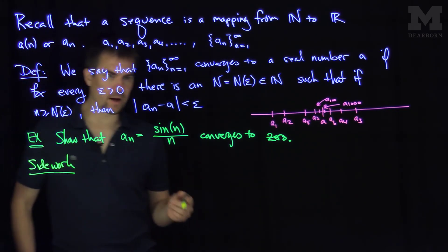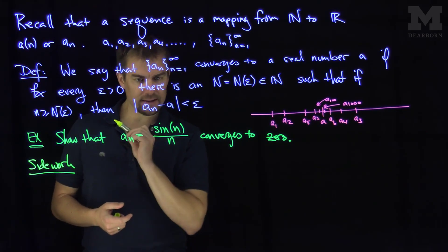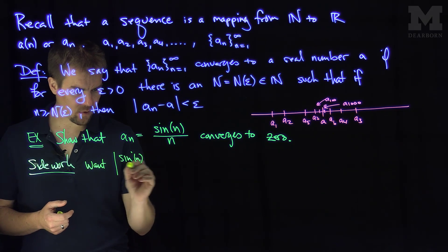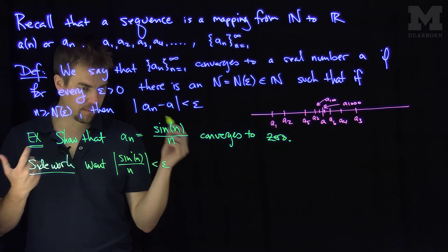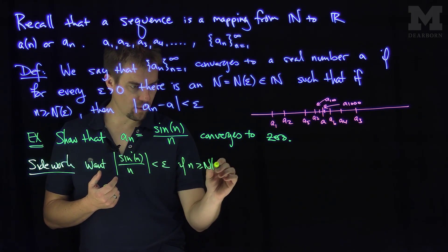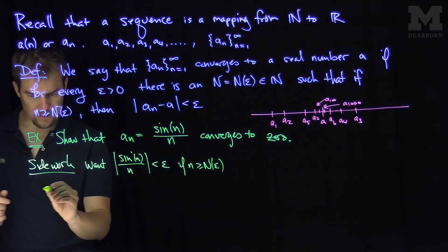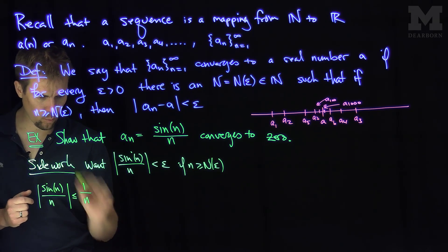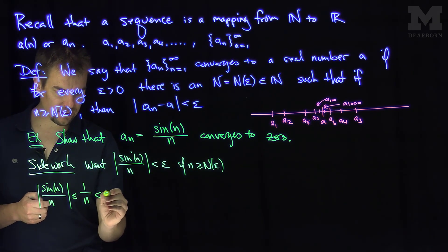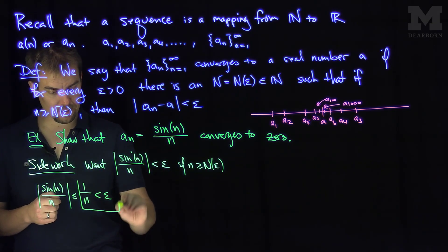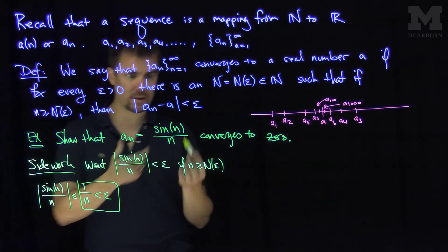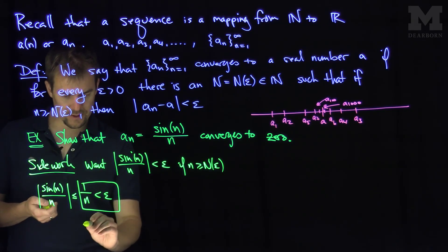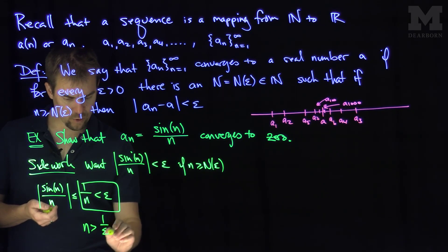So what do we want? Well, my little a is going to be zero, so I want the absolute value of sine of n over n to be less than some epsilon if n is bigger than or equal to N(epsilon). Let's estimate this. The absolute value of sine of n over n — since sine is no more than one, this is less than one over n. And I'd like one over n to be less than epsilon, because if one over n is less than epsilon, then the absolute value of sine of n over n is also less than epsilon. So this is true provided that n needs to be bigger than one over epsilon.